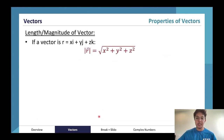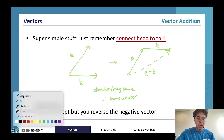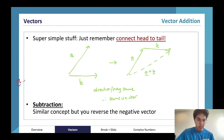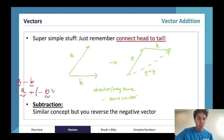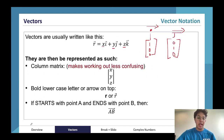With subtraction, the same concept applies, but we reverse the negative vector. So A minus B becomes A plus negative B. We're considering the same two vectors A and B, but this time we want to do A minus B, which we can rewrite as A plus bracket minus B.